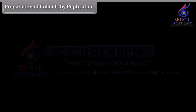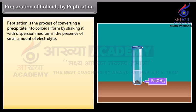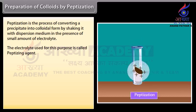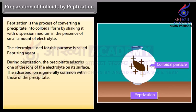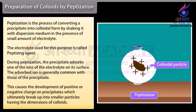Preparation of colloids by peptization. Peptization is the process of converting a precipitate into colloidal form by shaking it with a dispersion medium in the presence of a small amount of electrolyte. The electrolyte used for this purpose is called the peptizing agent. During peptization, the precipitate adsorbs one of the ions of the electrolyte on its surface — the adsorbed ion is generally common with those of the precipitate. This causes the development of a positive or negative charge on the precipitate, which ultimately breaks up into smaller particles having the dimensions of colloids.